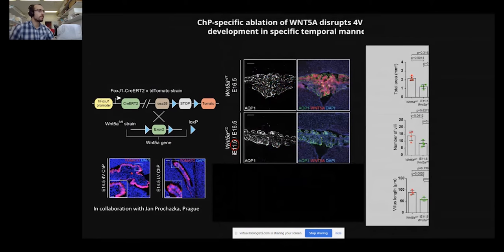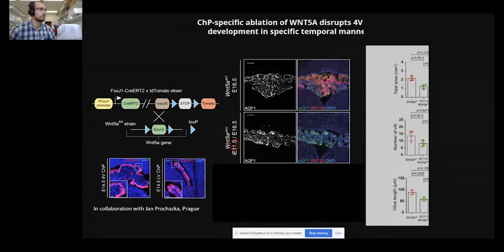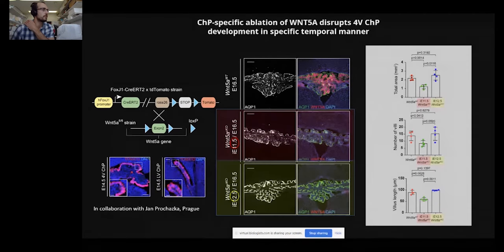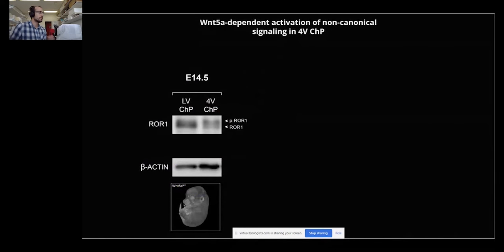Corroborating our previous findings, epithelium-specific abrogation of WNT5A resulted in a similar hypomorphic developmental phenotype of the fourth ventricle plexus. Surprisingly, we also uncovered a temporal component to this WNT5A-mediated regulation, where timing of WNT5A depletion influenced the observed phenotype. In contrast to WNT5A ablation at E11.5, induction of WNT5A depletion following tamoxifen treatment 24 hours later did not lead to any detectable reduction of the embryonic plexus size or its morphology.